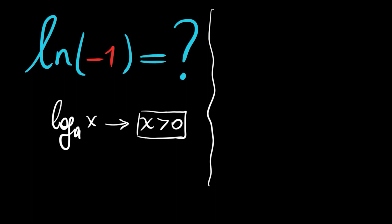We have actually ln of negative 1, but we will use the complex world. Now negative 1 is equal to e to the power i pi.